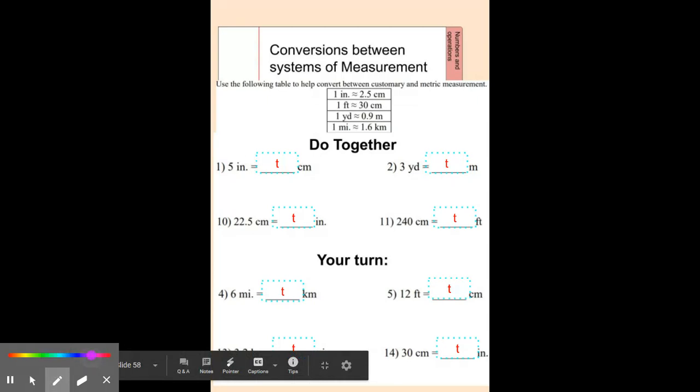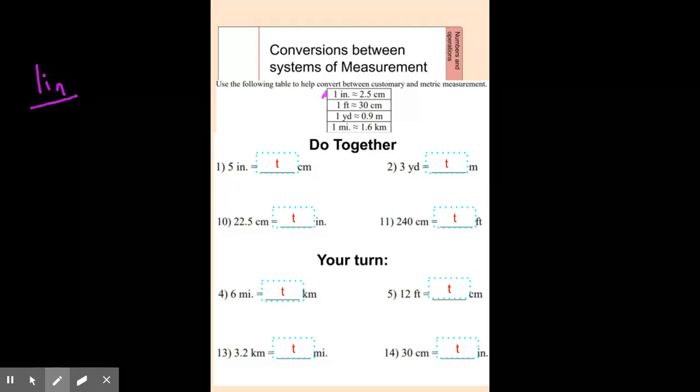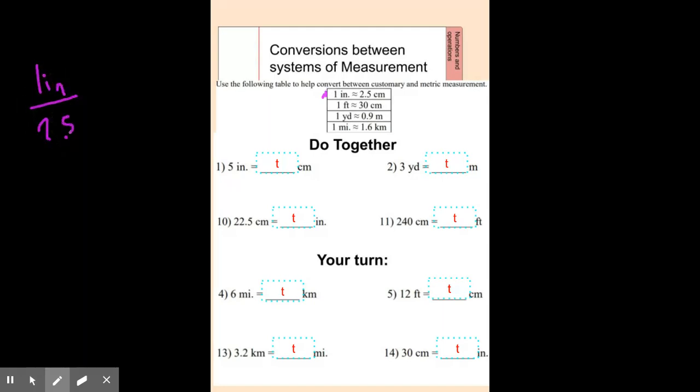Our first question on here says we're changing one inch into how many centimeters. So I'm going to start by looking right here. We know that one inch is 2.5 centimeters. So one inch is 2.5 centimeters. And I want to know five inches. So five inches equals what?